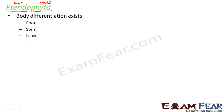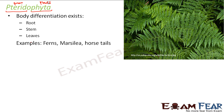Ferns are an example of pteridophyta where body differentiation exists — they have specific root, stem, and leaves. Other examples include marsilia and horse tails. They are relatively taller when compared to bryophytes because they have specialized vascular tissues — xylem and phloem — to conduct water and minerals from root to the above parts of the plant, and therefore these plants grow taller.